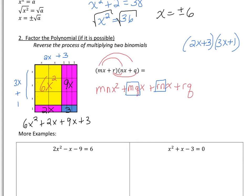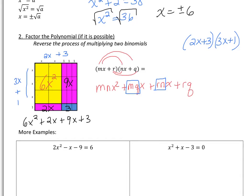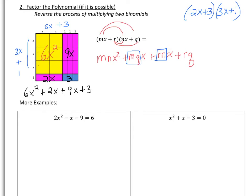The idea behind factoring is to use this thought process in reverse. When we start with a quadratic equation, we want to go in reverse to find the coefficients and constants of the two binomials. First, get everything to one side equal to zero. For this first problem, we move the 6 over: we've got 2x² - x - 15 = 0.